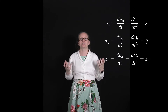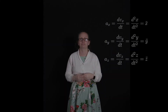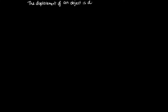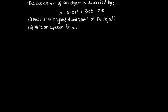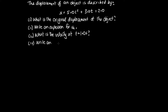Let's have a look at an example problem. The displacement of an object is described by x = 5.0t² + 3.0t + 2.0. Part 1: what is the original displacement of the object? Part 2: write an expression for v_x. Part 3: what is the velocity at t = 1.0 seconds? Part 4: write an expression for a_x. Part 5: what is the acceleration at t = 1.0 seconds?